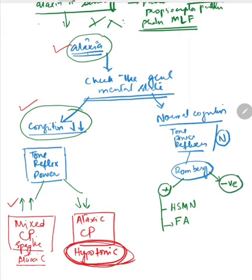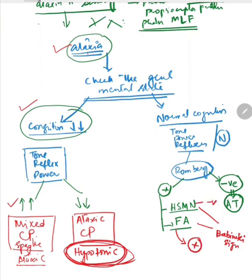If the Romberg is negative, then you need to consider that it could be ataxia telangiectasia. To differentiate between HSMN and Friedrich ataxia, there is only one test: Babinski sign. In Friedrich ataxia, Babinski sign will be positive, and in HSMN, Babinski will be negative.